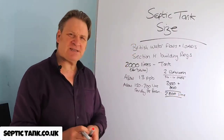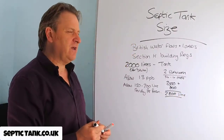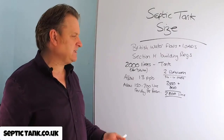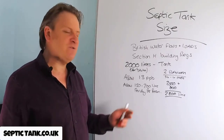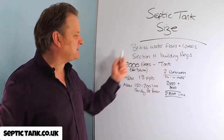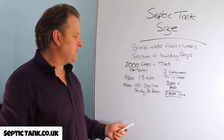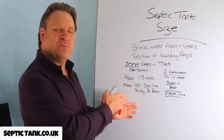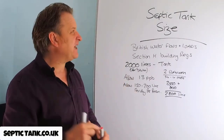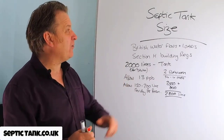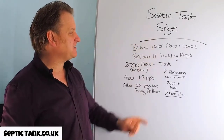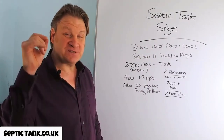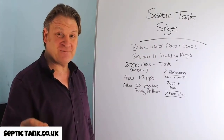Most septic tanks now start at 3,000 litres, but the point is you've now got a basis and a formula to help you work out the size of the septic tank that you need for the number of bedrooms that you have.